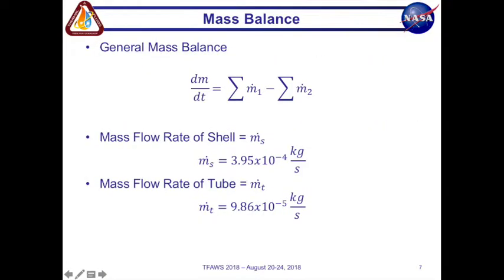Going into our mass balance as you can see you have the general mass balance equation. And since there is no mass accumulation this dm/dt goes away. And then we have our mass going in has to equal our mass going out. And these are our mass flow rates for our shell and tubes.